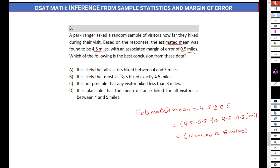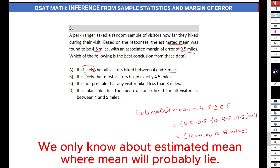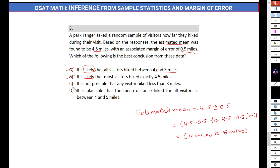Let's check the options. 'It is likely that all visitors hiked between 4 and 5 miles' — we can't say 'all visitors' or use 'likely' so strongly. We also cannot say 'exactly.' Because there is some margin of error, we cannot say exactly or use absolute language. What we can say is that it is plausible that the mean distance hiked for all visitors is between 4 and 5 miles. That is the correct answer.